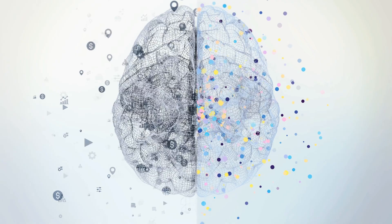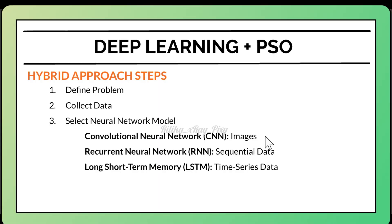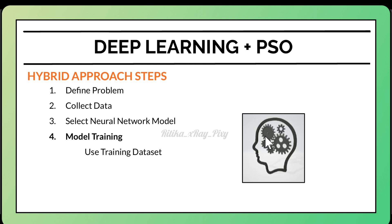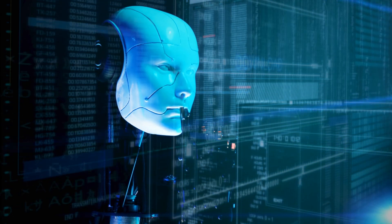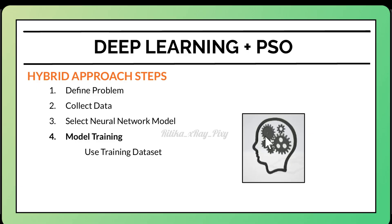Select an appropriate neural network architecture — for example, CNN for images or RNN for sequential data. Once the problem is defined, data collected, and model selected, begin training. Use the training dataset to train the model and adjust weights through back propagation to minimize the loss. After training, validate the model by evaluating its performance using a validation dataset.